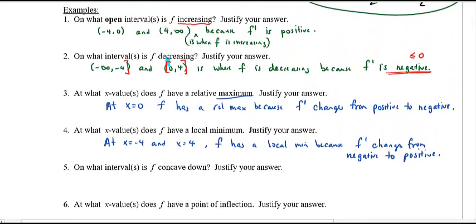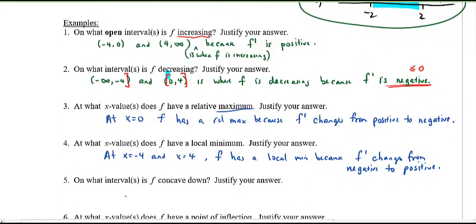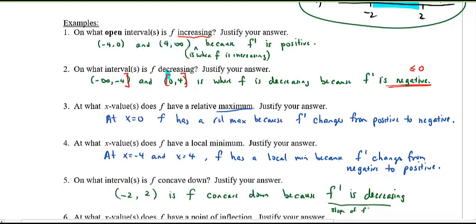On what intervals is it concaving down? Concaving down, of course, is when the second derivative is negative. So how about the open interval from negative two to two? Because, I'll be more specific, is where the original function f is concaving down because, that's right, f prime is decreasing. So notice the slope of the derivative, which is the second derivative, is decreasing. All right, f prime is decreasing the slope of the first derivative, right, which of course equals to the second derivative.